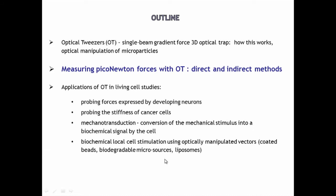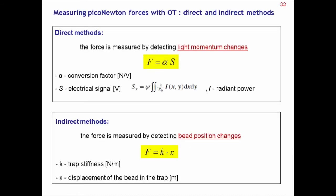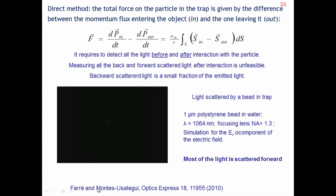Now, measuring piconewton forces with optical tweezers — direct and indirect measurements. Indirect methods are applied where you measure the position and assume a harmonic potential characterizing the bead in the trap, but you need to calibrate the stiffness. The direct technique detecting light momentum changes has been much developed recently with a single gradient beam. We detect the light momentum changes directly. This approach for single-beam trapping was introduced by the group of Farré and Montes in Barcelona.